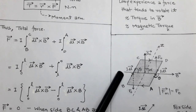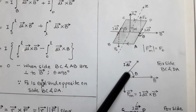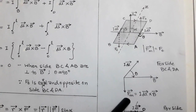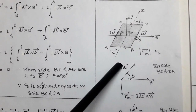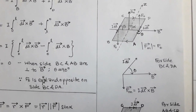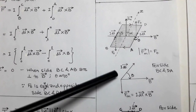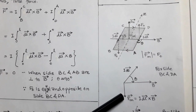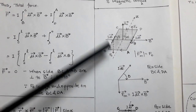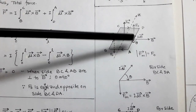This current element dl vector makes some angle theta with respect to external field B. Due to this current element in the external field, it experiences a magnetic force. The direction of the magnetic force is determined by the cross product of dl and B vector. We take the cross product dl vector cross B vector to get the magnetic force. The direction of the magnetic force is given by the right-hand rule. We turn the dl vector towards B vector and using the right-hand thumb rule, we get the force that is downward. For side DA, the direction of current element dl vector is from D to A and it makes an angle theta with respect to B.